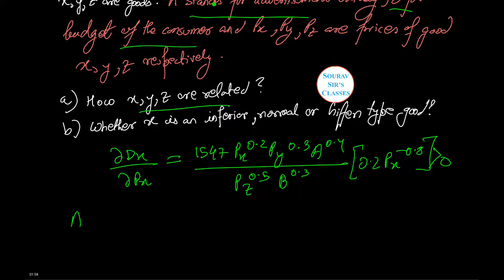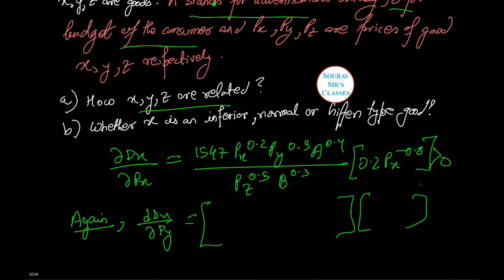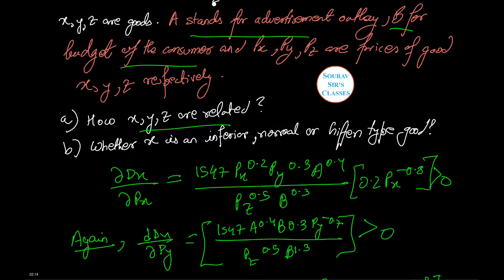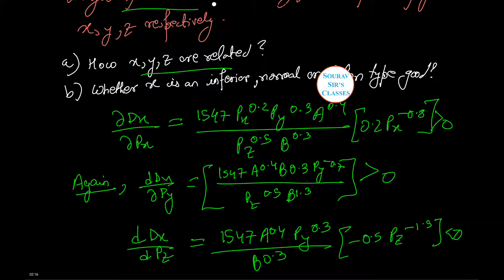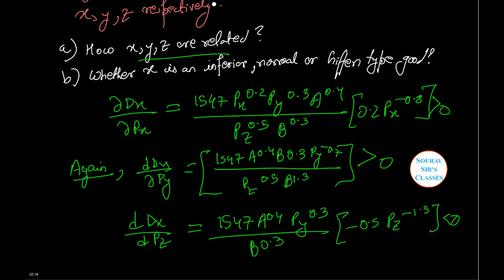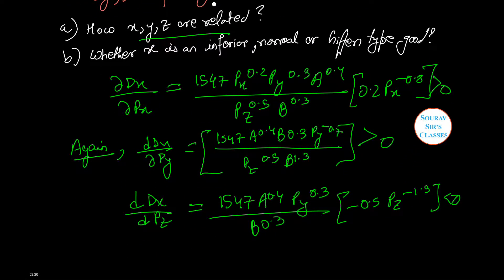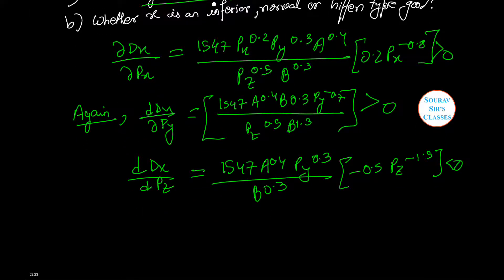Now again we compute del Dx by del Py, which equals the same expression multiplied by 0.3 into Py to the power minus 0.7. Del Dx by del Py is greater than zero when del Dx by del Px is less than zero.